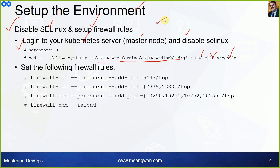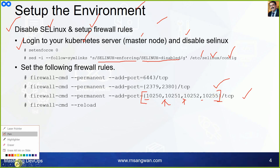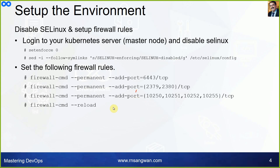In the firewall command, you can put all ports in a single line separated by commas within curly braces — but there must be no spaces, otherwise the command will fail. Curly braces represent array syntax in Linux, allowing multiple parameters to be passed to the same command. You can also do it individually one by one. Then reload the firewall.